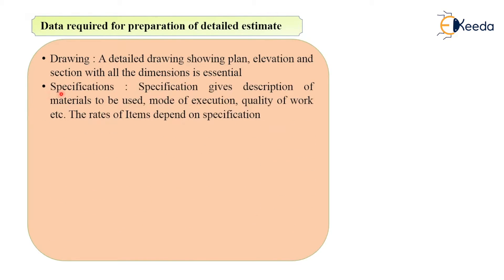Then you will need specifications. Specifications will give you the description of material to be used, and will also give you the mode of execution you should adopt for a particular construction process, or what should be the quality of work. You must be ready with the specifications so that it is very clear what the mode of execution will be, and from that data you can determine the various quantities of items and also add the rates of various quantities of items of work.